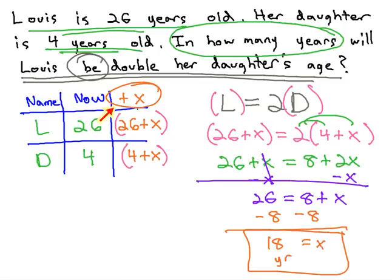When we don't know the amount of time that's passing, we'll simply add x and follow the same patterns we have solved for all of our other age problems.